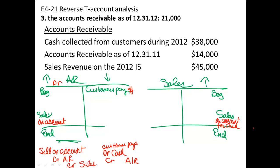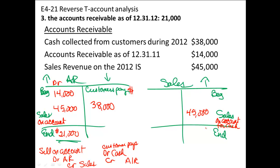Here's our fact situation. Cash collected from customers during the year was $38,000. Accounts receivable at the beginning of the year was $14,000, and sales revenue — or sales on account for the year — was $45,000. So the question is: what is the ending balance? The ending balance is $21,000. I got that by adding up the debit side, subtracting the credit side, and seeing which side is larger. The debit side is larger, so we have a debit balance — which makes perfect sense in accounts receivable because it's a current asset account. Sales revenue of $45,000 shows that we debited accounts receivable and credited sales, which was that first entry.